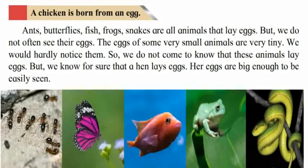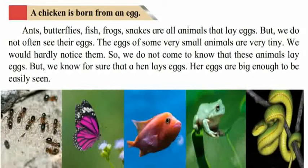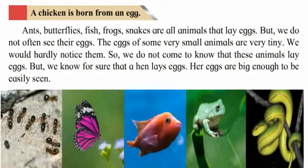Now let's come to the second page of the textbook — we are going to learn the second paragraph. A chicken is born from an egg. Have you ever seen a hen? Now keep your finger on each and every word as I read: ants, butterflies, fish, frogs, snakes are all animals that lay eggs. But we do not often see their eggs — we have hardly seen them.